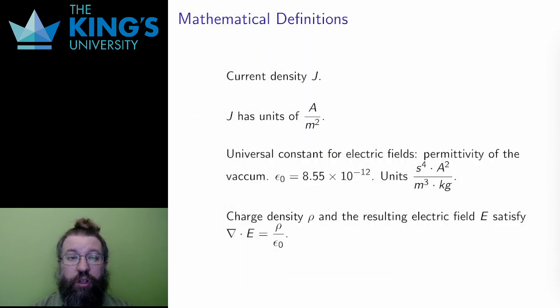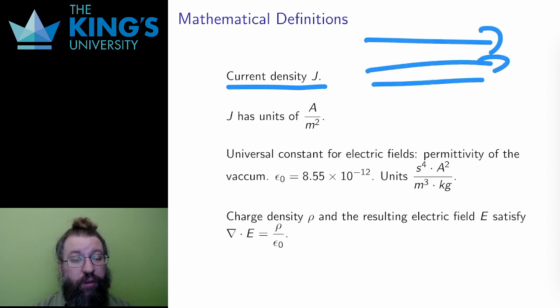In addition to charge, the flow of charge in current exists. This is usually described by a current density J, which describes the current flowing through a cross-sectional area. J has units of coulombs per second per square meter, and in SI units, that's amps over meters squared.